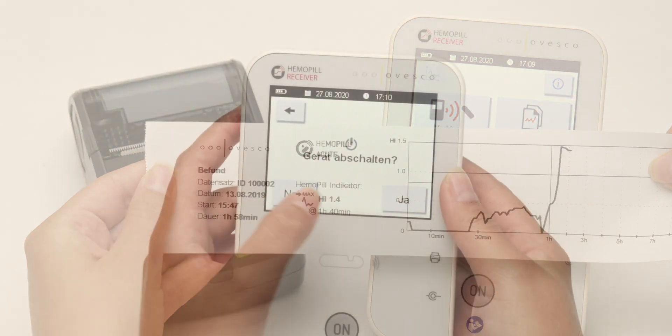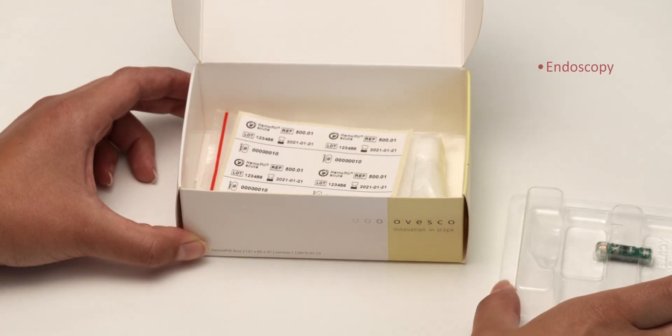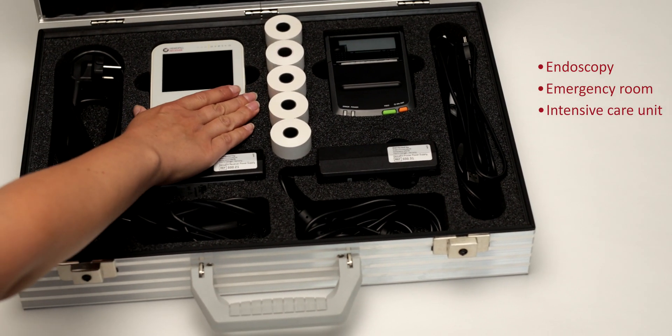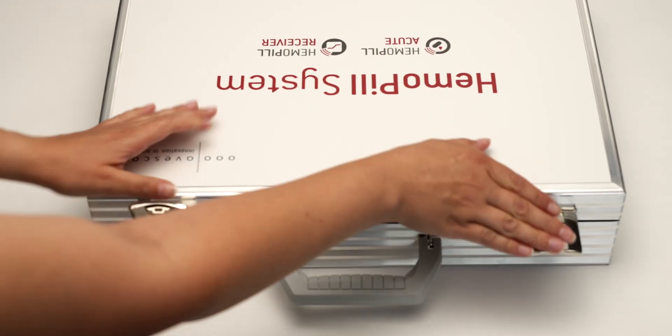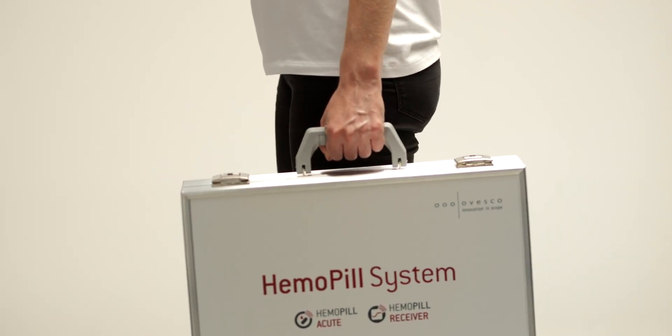Due to quick and easy measurement, the Hemopill Acute can be used in different areas, such as endoscopy, emergency room, or intensive care unit. This allows quick prioritization of endoscopic procedures in daily clinical routine. Ovesco. Innovation in scope.